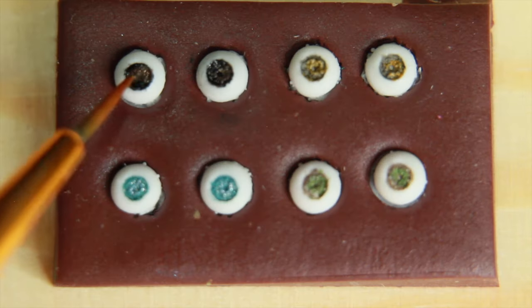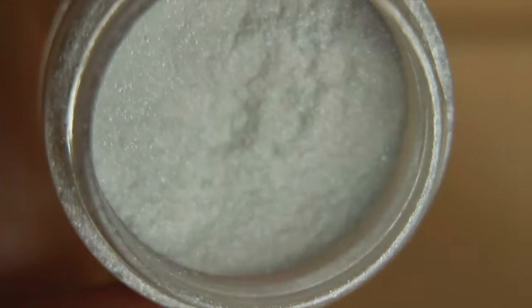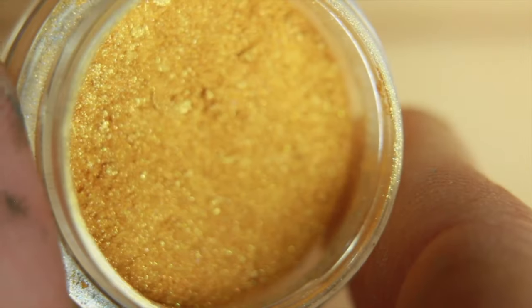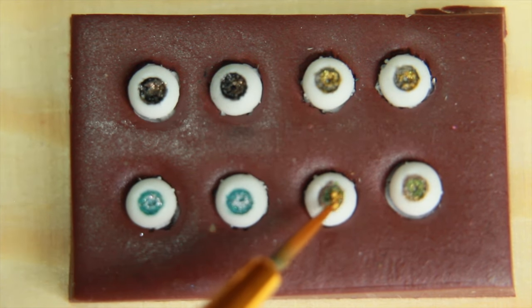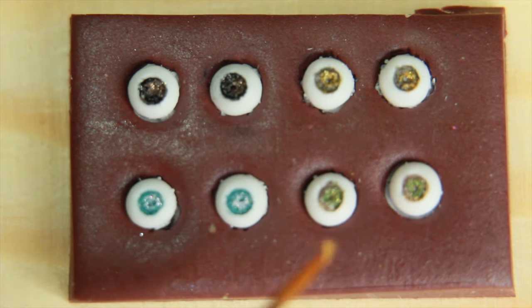If you want brighter eyes, you can add a little bit of makeup powder. I like to add a bit in only one side of the eye and I vary the color according to what color I am making.